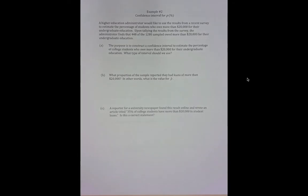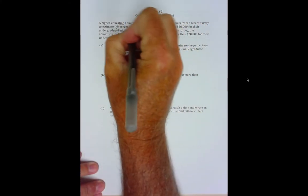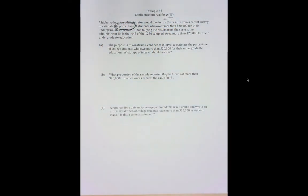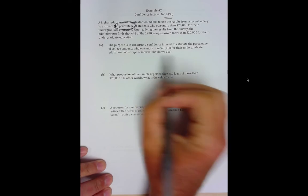Next problem. A higher education administrator would like to use the results from a recent survey to estimate the percentage of students who owe more than $20,000 for their undergraduate education. Right there, estimate the percentage—that makes it a proportion problem. Upon tallying the results from the survey, the administrator finds that 448 of the 1280 sampled owe more than $20,000 for their undergraduate education.